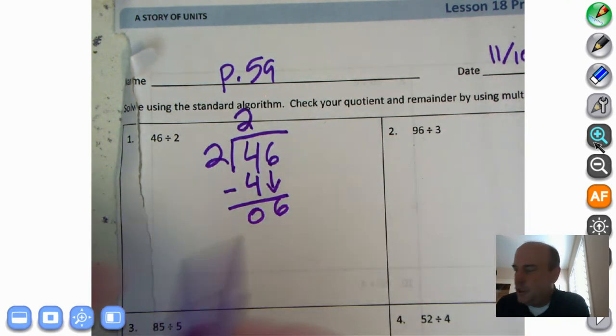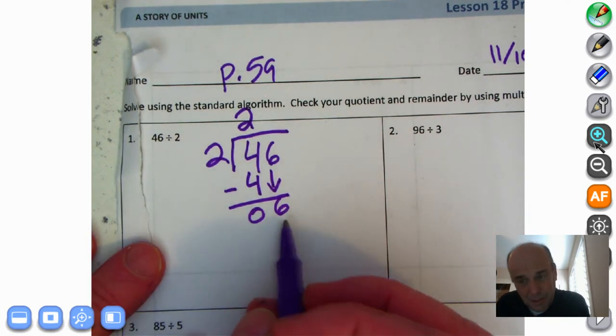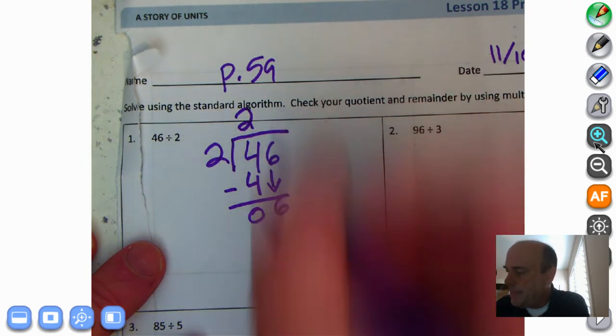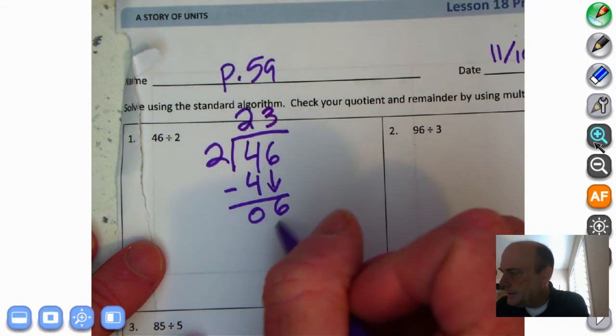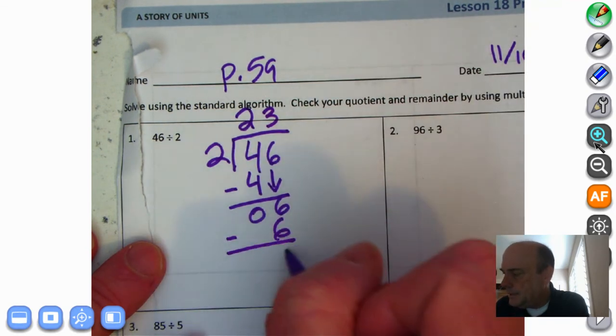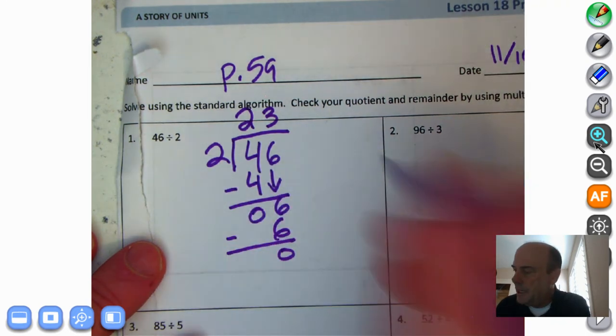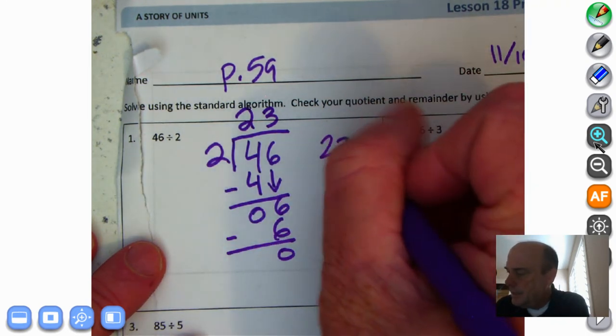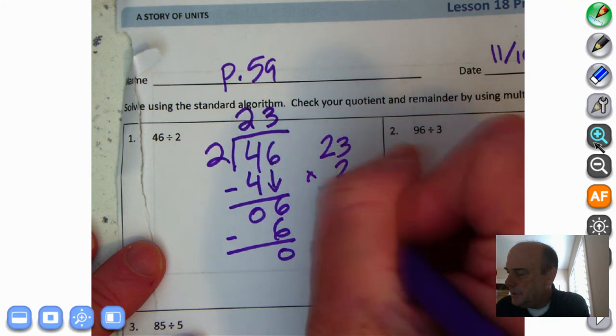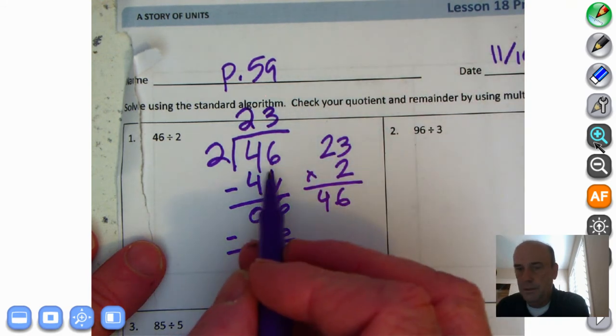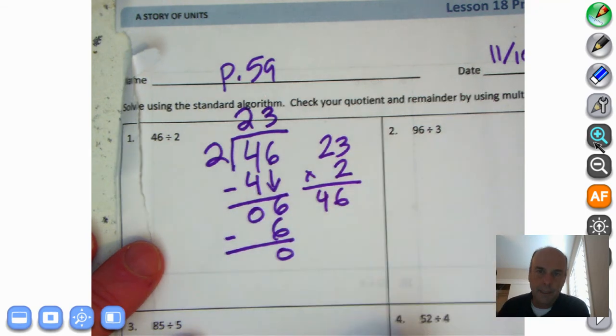Then we think, how many 2s can I get into 6? 2 times 1 is 2, 2 times 2 is 4, 2 times 3 is 6. We subtract and we get 0. So our answer must be 23, remainder 0. Let's check using multiplication. 23 times 2. 3 times 2 is 6 and 2 times 2 is 4. Are we correct? You bet we are.